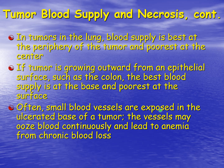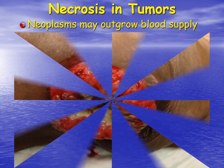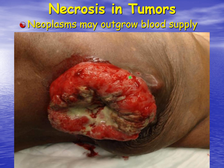Small blood vessels are often exposed in the ulcerated base of the tumor, or at the surface for epithelial tumors. These vessels may ooze blood continuously, which can lead to one of the classic signs of cancer — anemia from chronic blood loss. An ulcerated tumor may even be the source of severe hemorrhage. In colon cancer, this is why we can see occult blood in stool samples. This picture shows a tumor with necrosis at the surface — this is an epithelial-based tumor, which is why we see that surface necrosis.